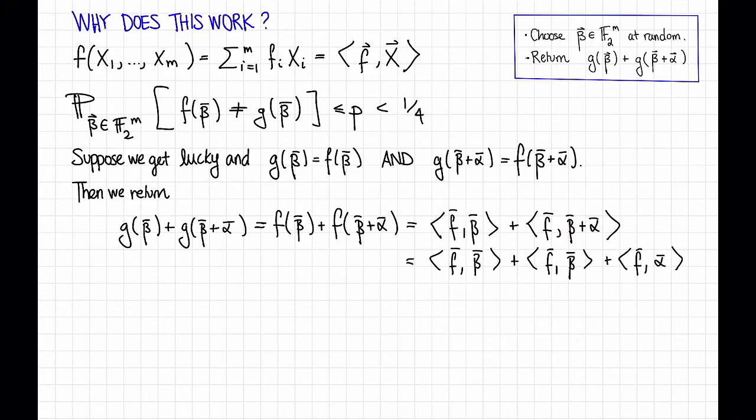Now we can use the fact that this function is linear to break it up over this sum. And then we can use the fact that we're working over F₂, which means that anything plus itself is just equal to 0. Plus is the same as minus. So these two terms cancel.